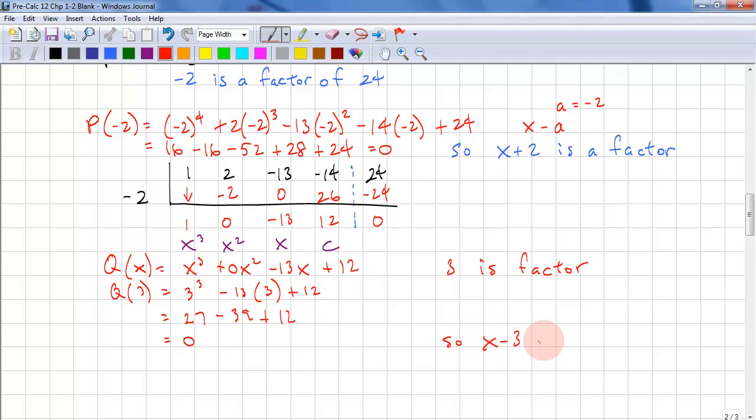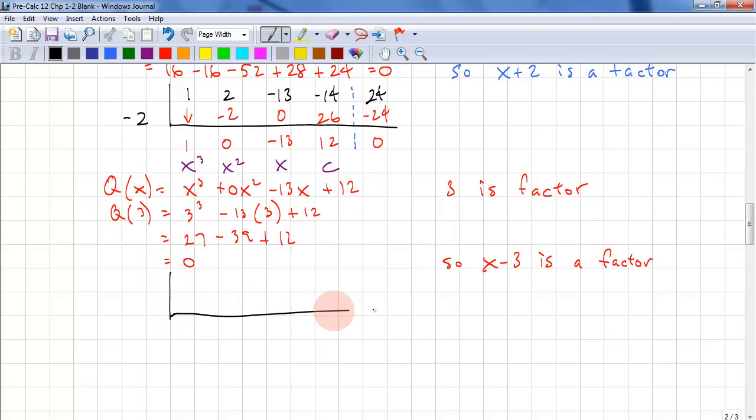x minus 3 is a factor. So we copy down the coefficients: 1, 0, negative 13, 12, and we put the 3 out there. Bring the 1 down. 3 times 1 is 3. 0 plus 3 is 3. 3 times 3 is 9. Negative 13 plus 9 is negative 4. 3 times negative 4 is negative 12, and as expected, the remainder is 0.